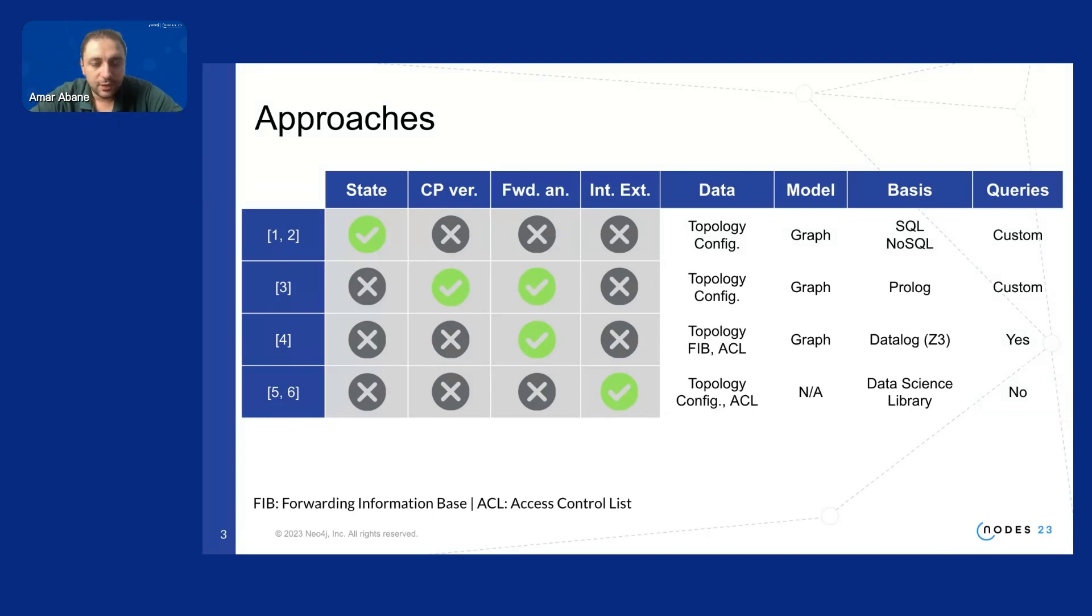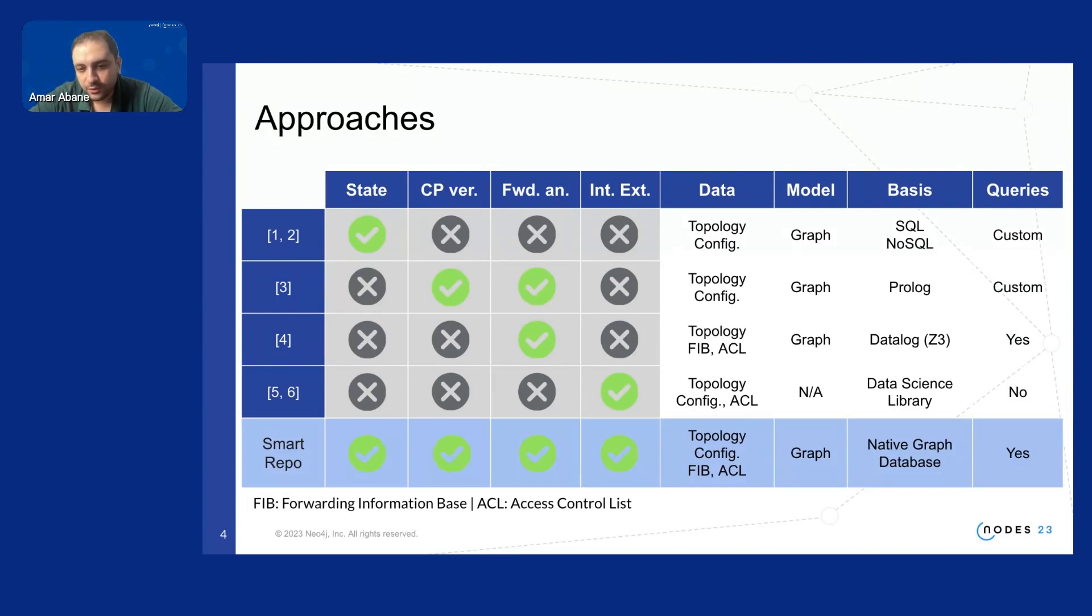So one of our concerns here or objectives is to try to design a smart repository for network management which can provide these four features by centralizing the necessary data from the network in a form of a graph or knowledge graph and then provide a unified query language for accessing these different features with one tool and here we explore native graph databases for designing this tool and we work with Neo4j.